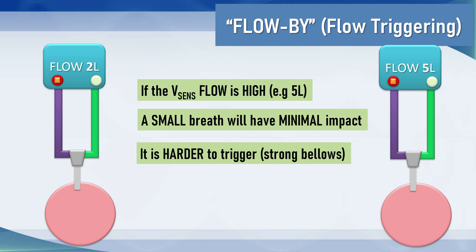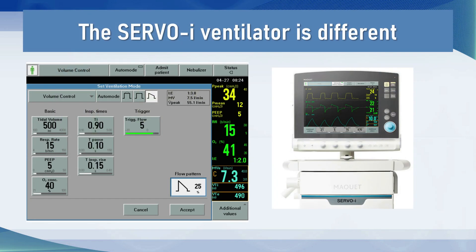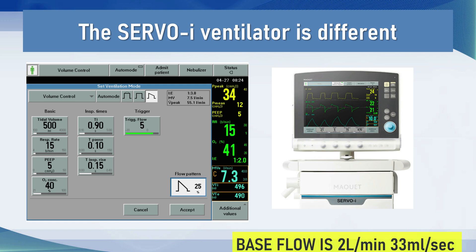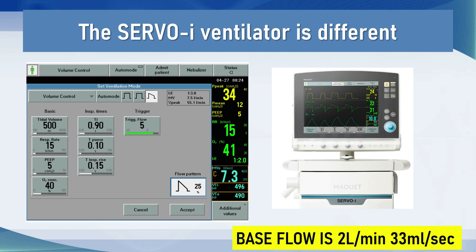This works on Puritan Bennett ventilators and many other products on the market. Unfortunately, if you use the Servo-i ventilator, this is completely different. The Servo-i is a wonderful machine but really confusing with regards to how flow-by works. The base flow is always 2 liters per minute — or 33 mils per second — compared to 1.5 liters on the Puritan Bennett.